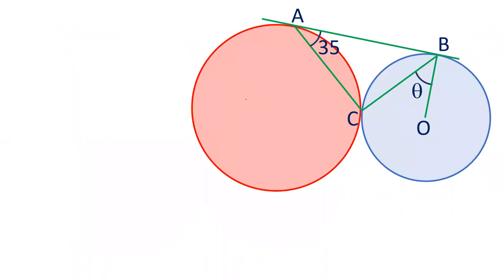To start with the question, first of all draw the common tangent from C. CD is the common tangent of the two circles.